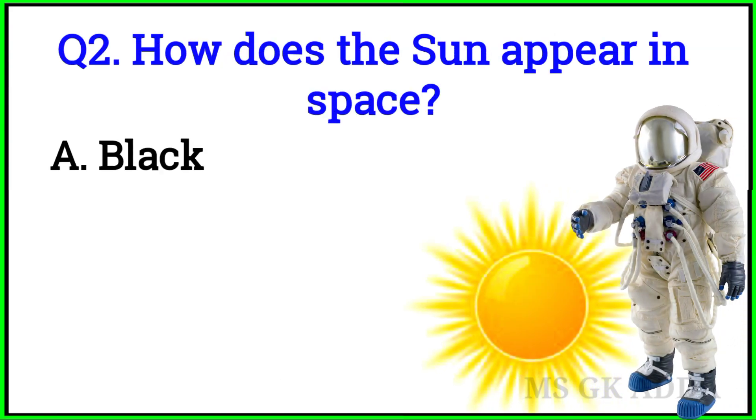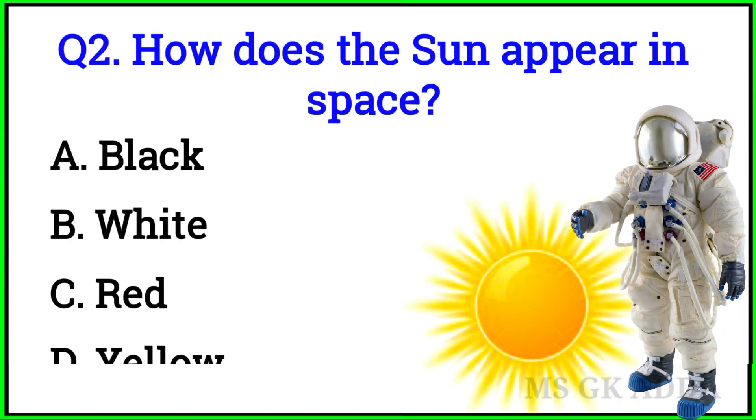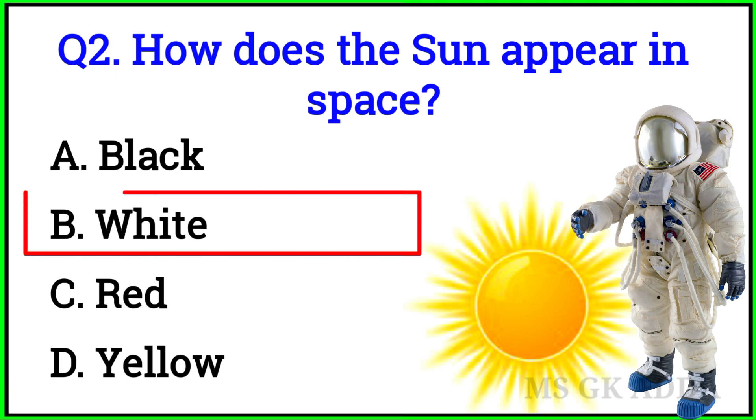Question 2: How does the sun appear in space? Option B — White.